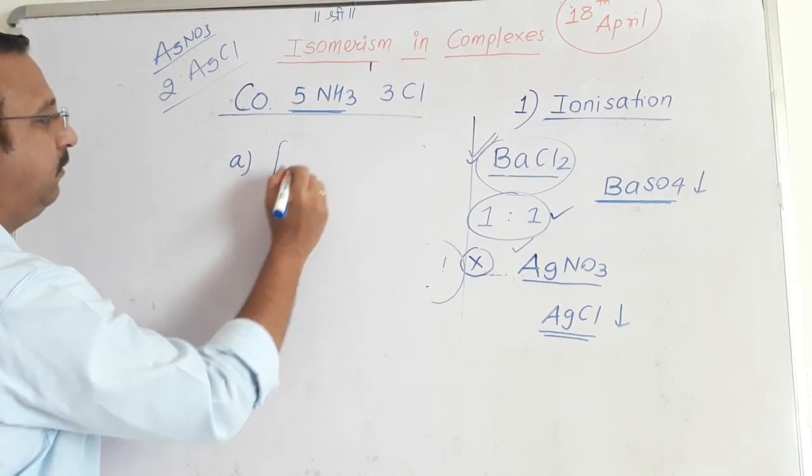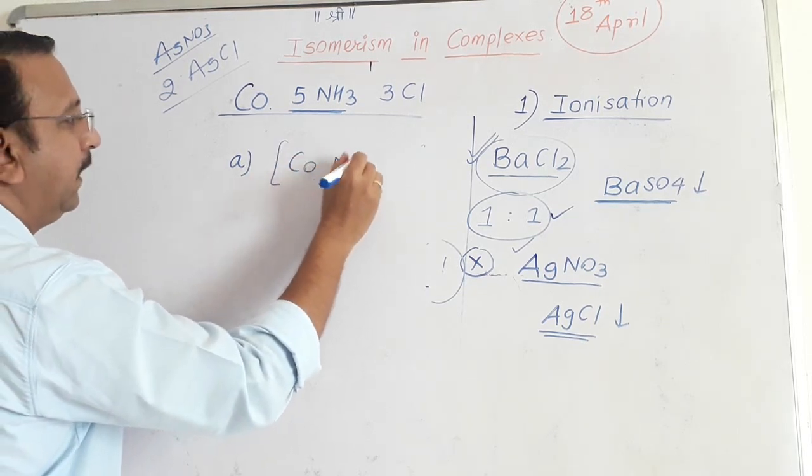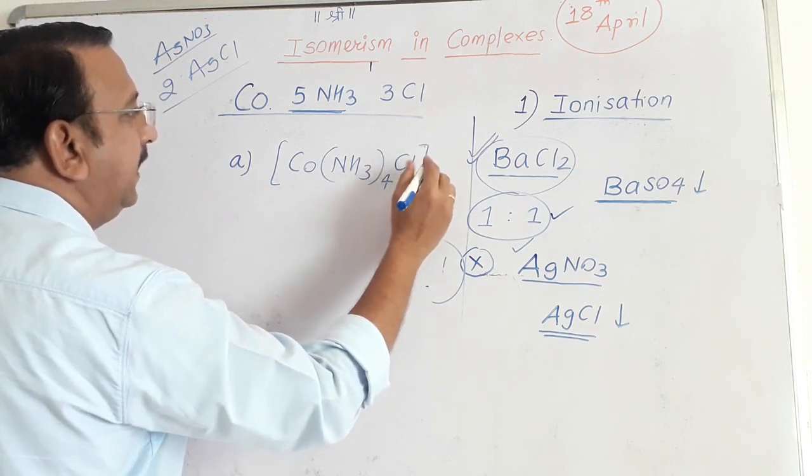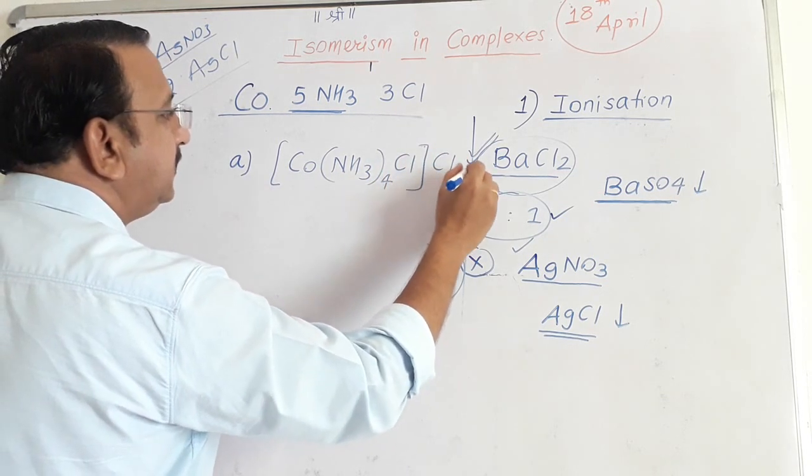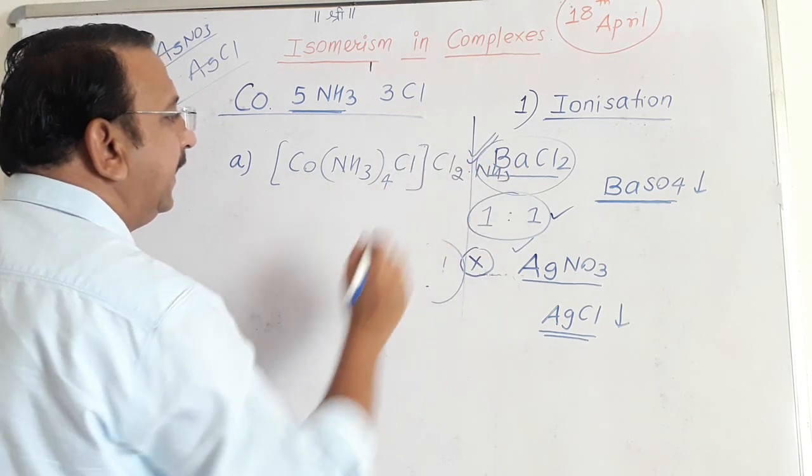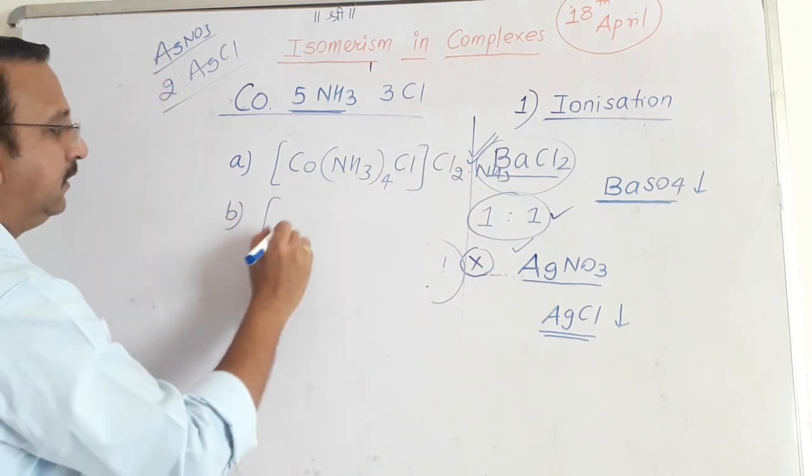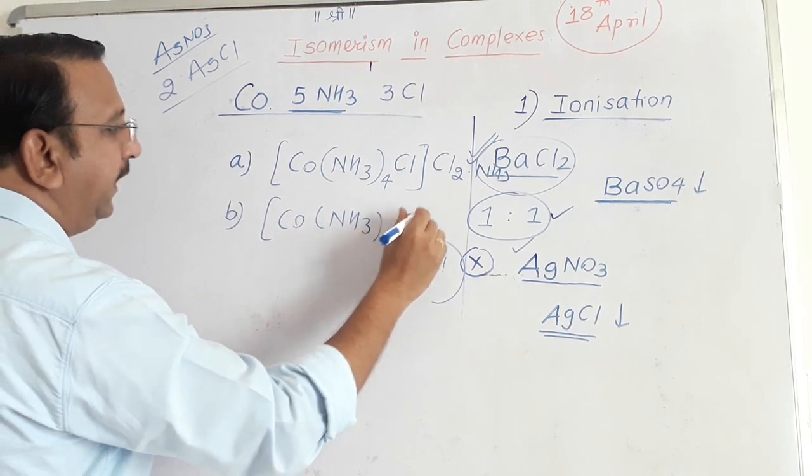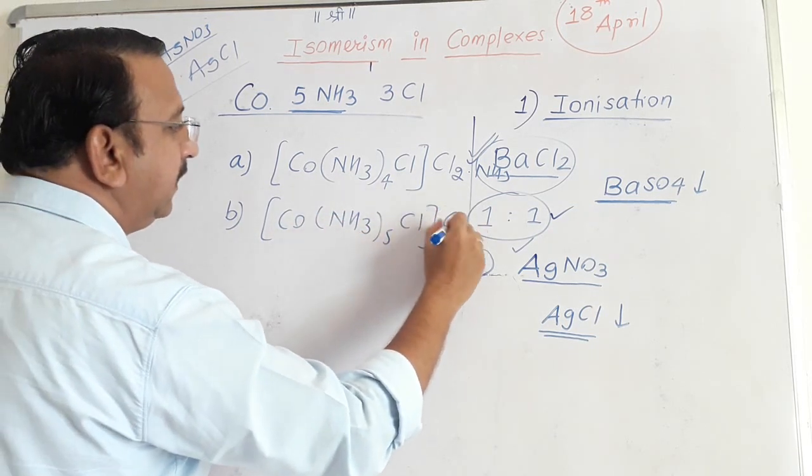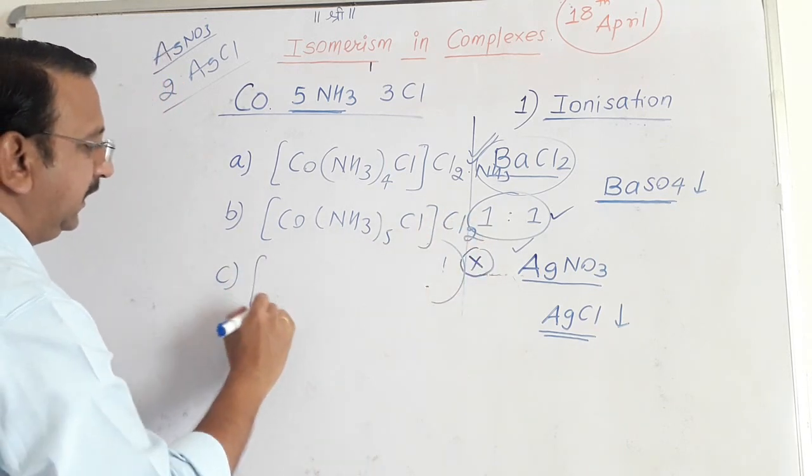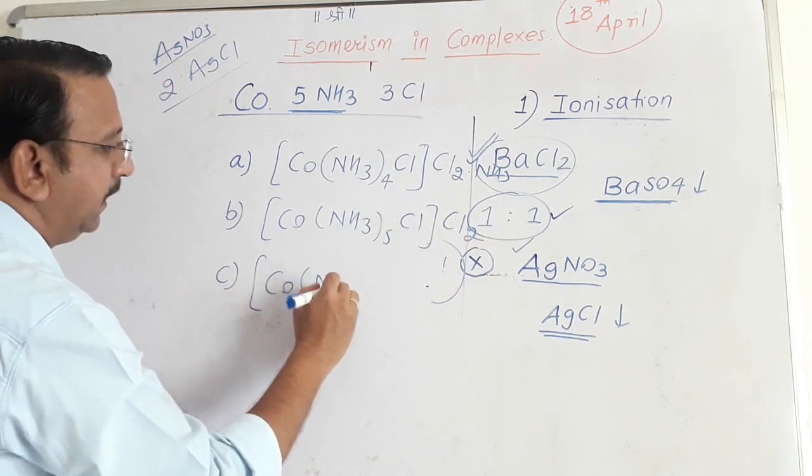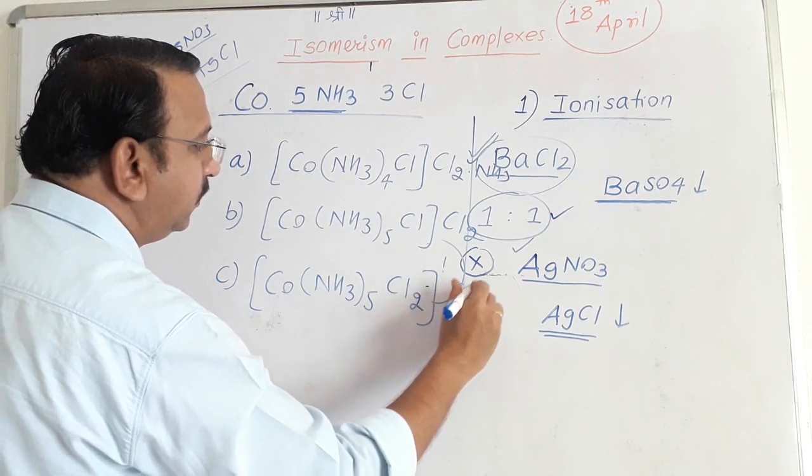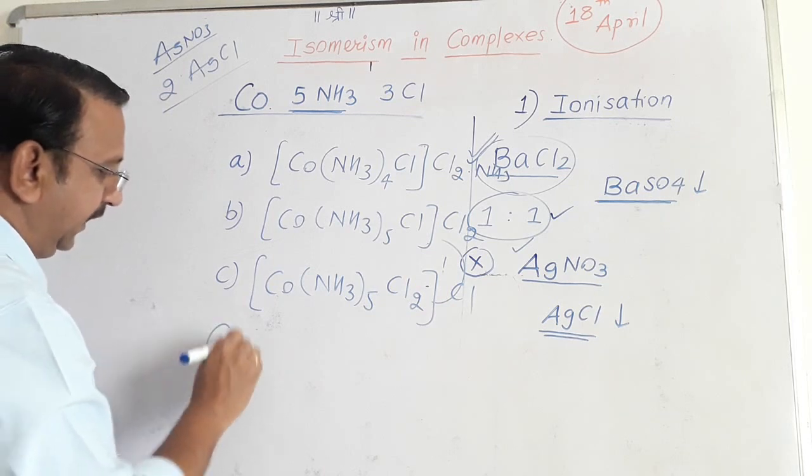Option A: [Co(NH3)4Cl]Cl2·NH3. Option B: [Co(NH3)5Cl]Cl2. Option C: [Co(NH3)5Cl2]Cl. And option D: none.